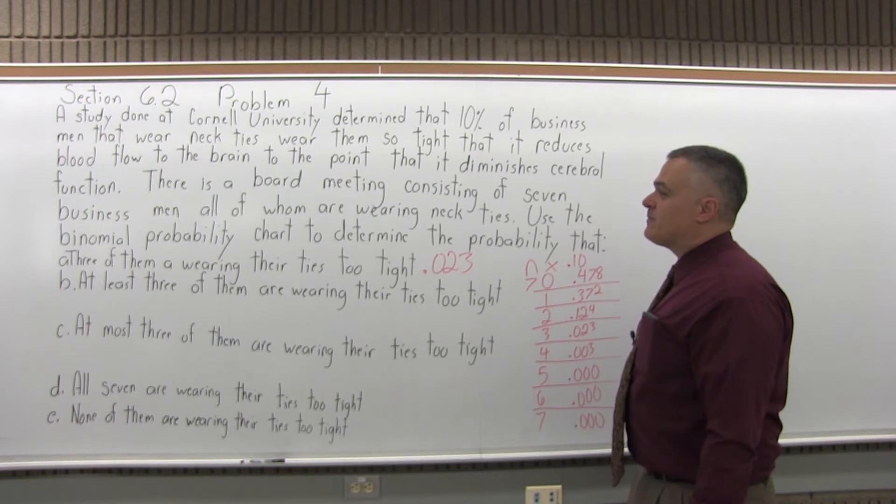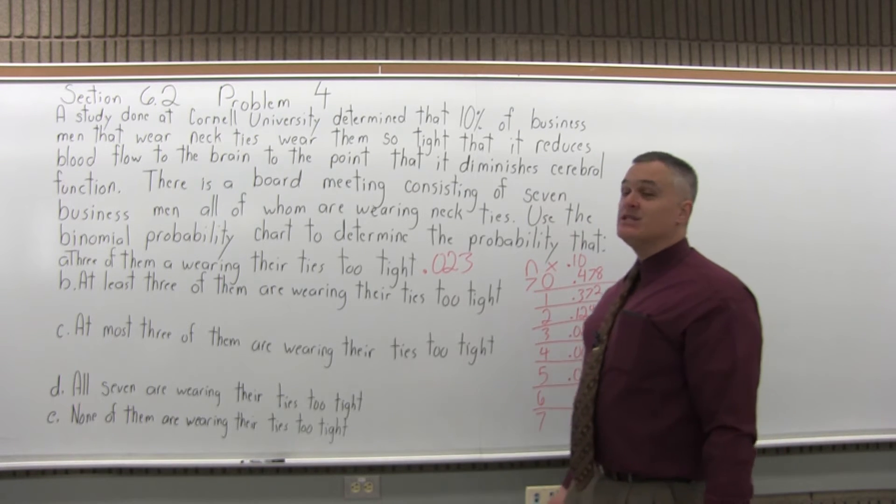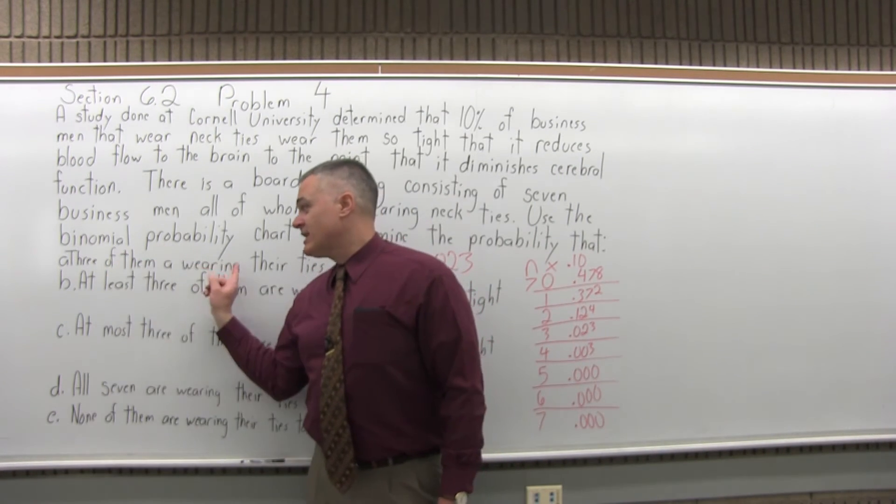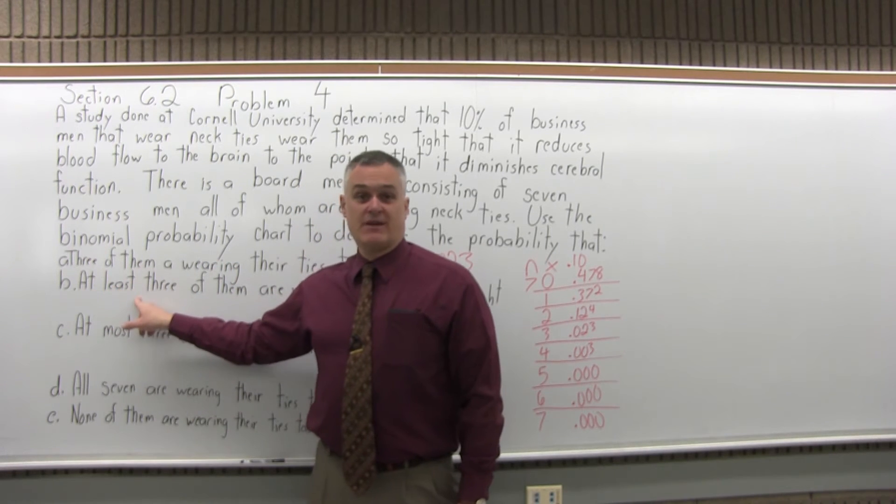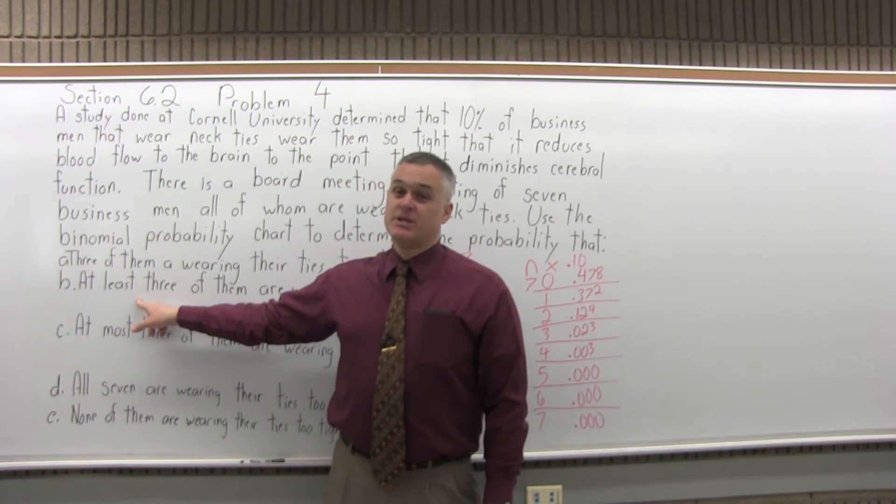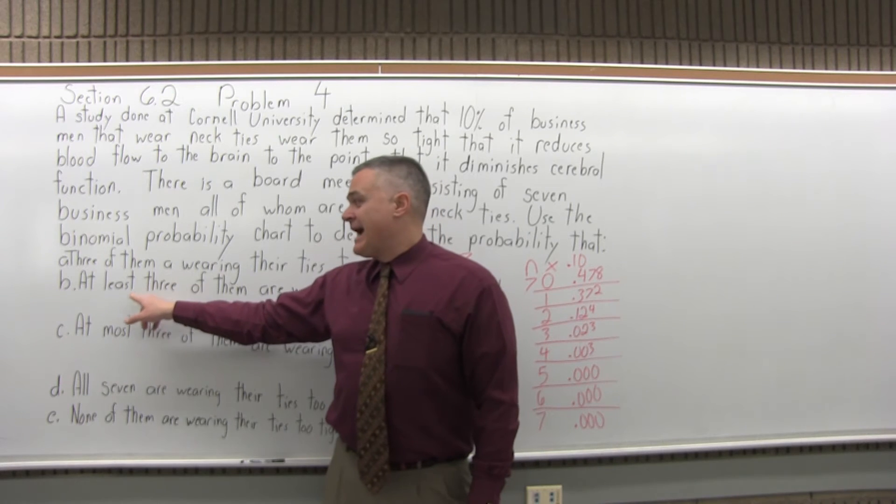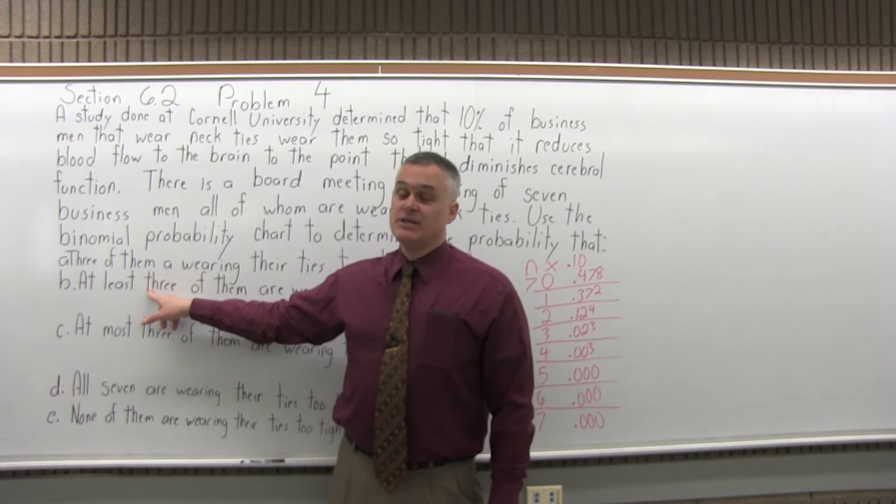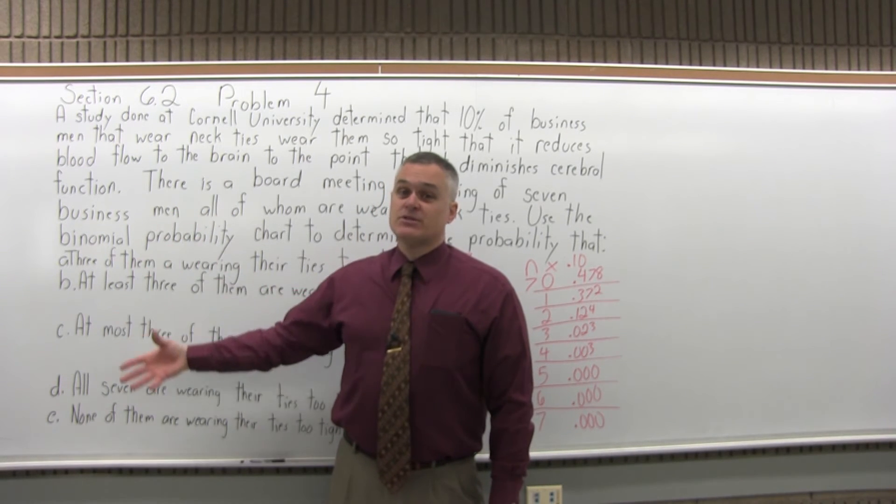Now, B says at least three. Notice the difference, they seem so close. Three of them have their ties on too tight, at least three have their ties on too tight. But it's a big difference in how you answer the problem. At least three means three is the least. You're going to have to add several answers together.